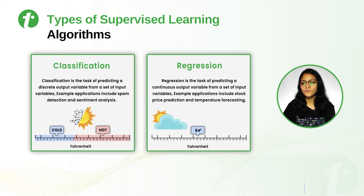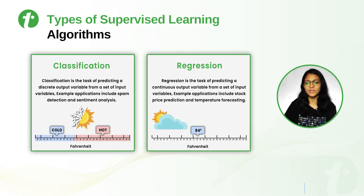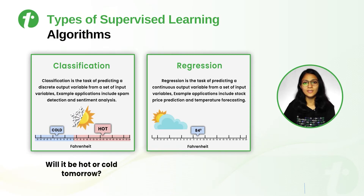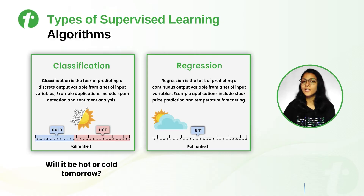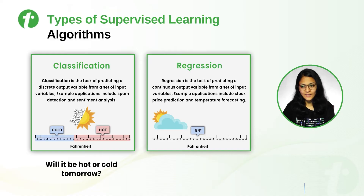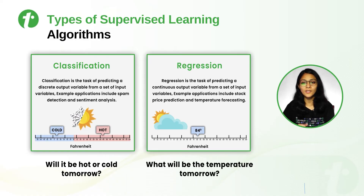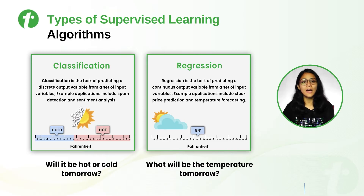In case of classification, it tells us whether the environment is hot or cold — we have only two categories as the output. In the case of regression, it tells the exact value of the temperature, for example 84 degrees Fahrenheit, meaning we have a continuous value as the output.